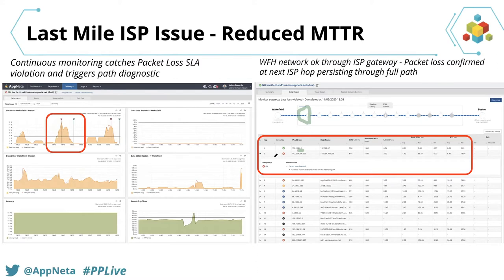One interesting thing we're hearing from customers is that this data is useful not just for network engineers, but they want to push it upstream to the help desk with a playbook: if you see this type of information in the diagnostic, you can make these recommendations. Perhaps that prevents an escalation to the network team. We're trying to create shielding for the network team so there are steps that can be taken before an issue is escalated upstream.